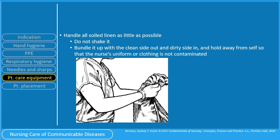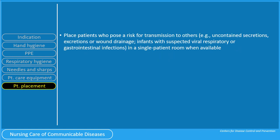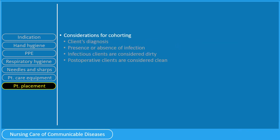Handle all soiled linens as little as possible. Do not shake it — bundle it up with the clean side out and dirty side in, and hold it away from yourself so that the nurse's uniform or clothing is not contaminated. Place patients who pose a risk for transmission to others in a single patient room when available. When a single room is not available, consider cohorting. Consider the client's diagnosis and the presence or absence of infection — a patient without infection should not be roomed with a patient with an infection. Even infectious patients must only be roomed together if they have the same infection. Infectious clients are considered dirty while post-operative clients are considered clean and must never be roomed together.